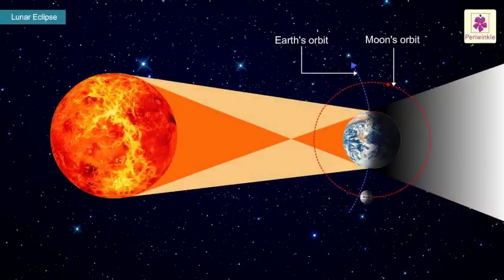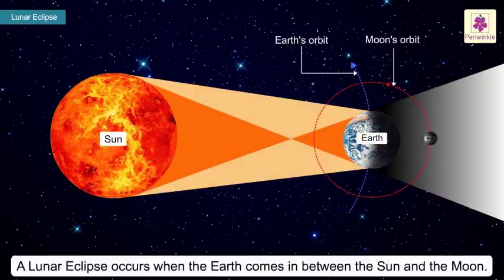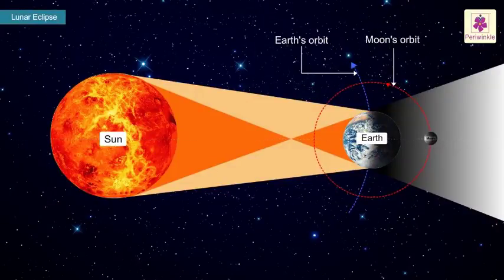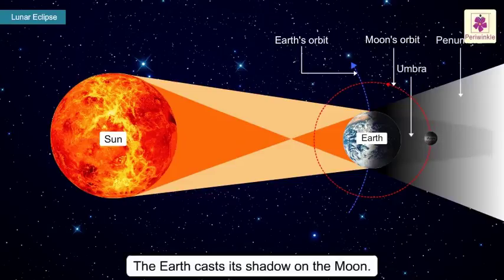Lunar Eclipse. A lunar eclipse occurs when the Earth comes in between the Sun and the Moon. During a lunar eclipse, the Earth casts its shadow on the Moon.